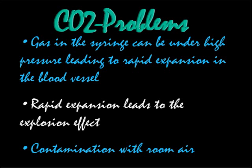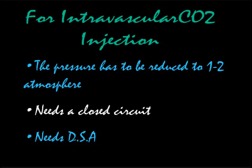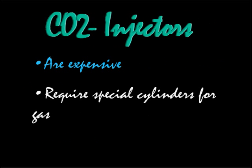Because it is colorless, we can have contamination with air. So if we want to use it in the intravascular space, we have to first reduce the high pressure in the cylinder to a pressure close to normal atmospheric pressure. We need a closed circuit and a digital subtraction system. Everything is commercially available but the problem is it is very expensive and requires very special cylinders to load the carbon dioxide gas.